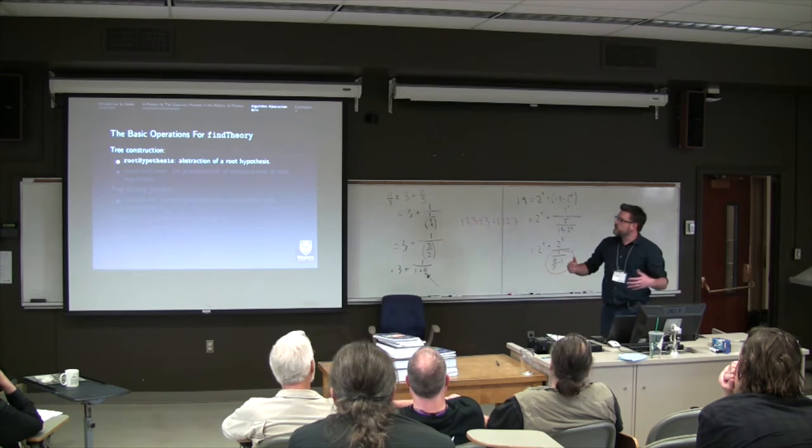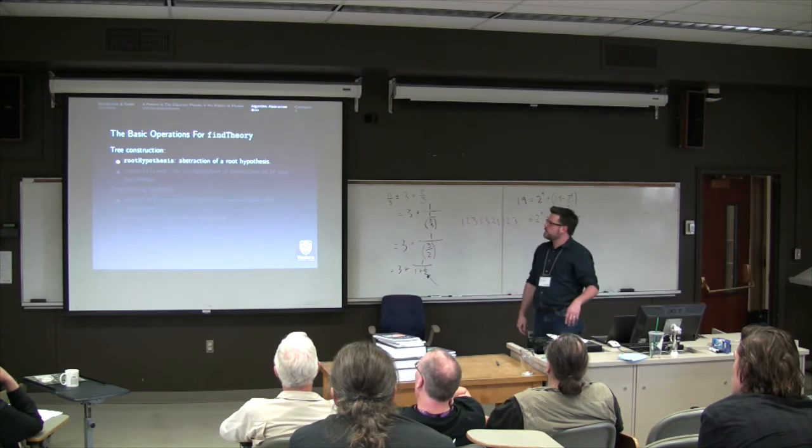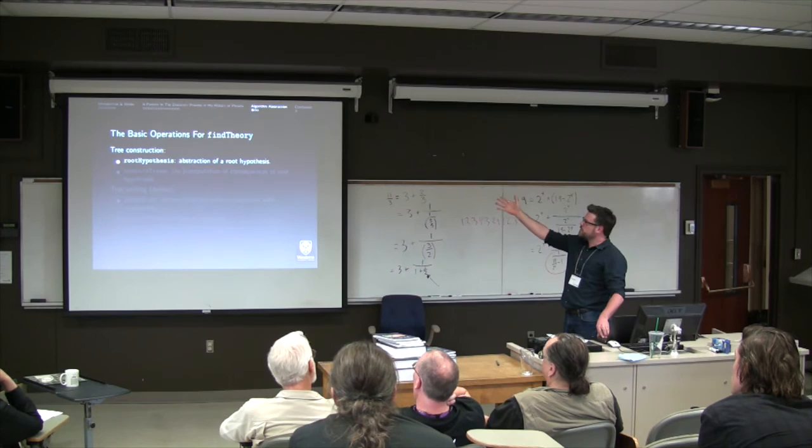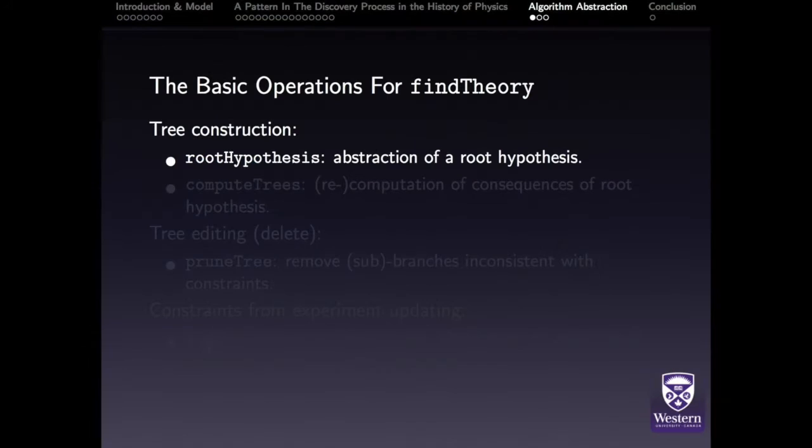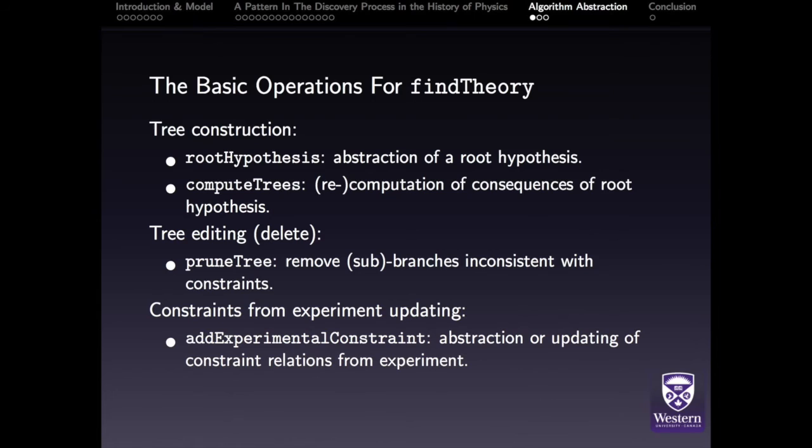Hopefully you can start to see the kind of pattern going on. So, I'll just now very briefly give the basic operations for an algorithm I'm calling FindTheory, which I think can recover the basic pattern involved in all these cases. So, I've got a bunch of subroutines that I'm unspecified at this point, but you get the idea. So, root hypothesis is abstraction of root hypothesis. Analogy is playing a role in every single case. Compute trees, you just need to compute consequences. If you need to see if something's consistent, if there's an inconsistency, you've got to prune some branch to restore consistency. And if someone does some experimental work and you bring in a new constraint, then there has to be an operation for that. Those are the basic operations. And there's some special ones.